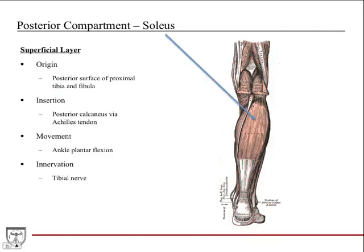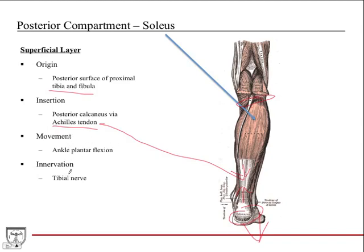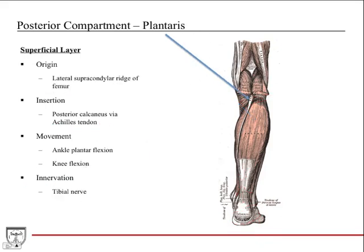The soleus is this large muscle deep to the gastrocnemius. It originates from the posterior surface of the proximal tibia and fibula — a nice broad origin. It also inserts onto the posterior calcaneus via the Achilles tendon. Contracting, it helps pull the foot into plantar flexion. Unlike the gastrocnemius, it does not cross the knee joint, so it has no effect on knee flexion or extension. Innervation is the tibial nerve.